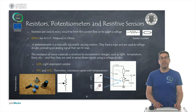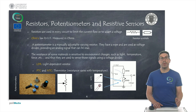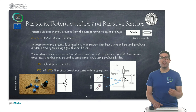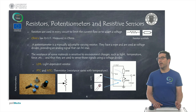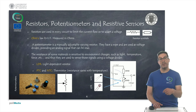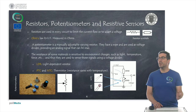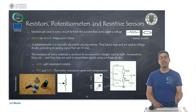Talking about resistors, potentiometers and resistive sensors: a resistor is used in almost every circuit and is mainly used to limit current flow or drop voltage. We can use Ohm's law to find the current traversing through a resistor — the resistance is equal to the voltage divided by the intensity of the current.